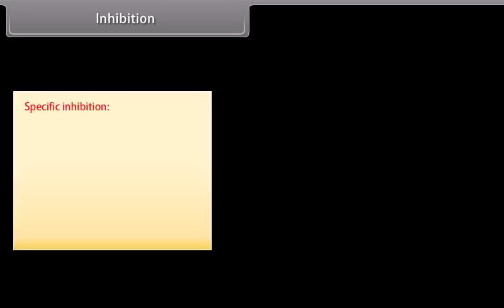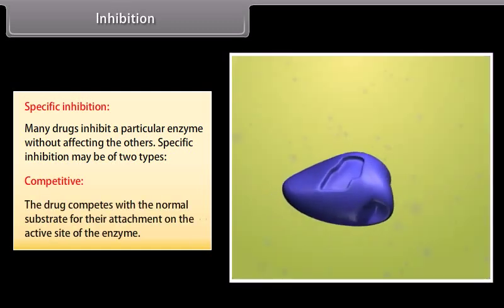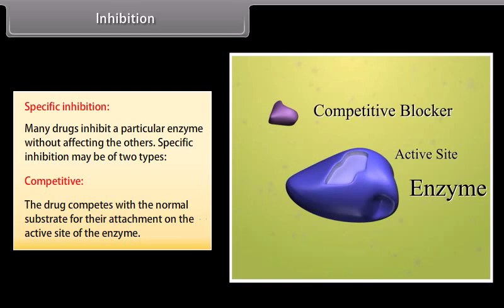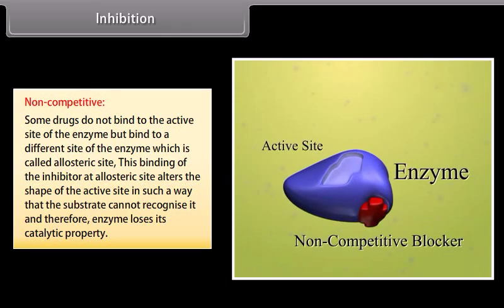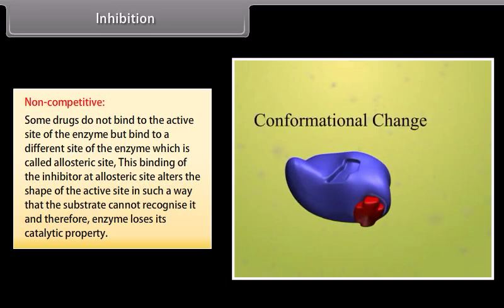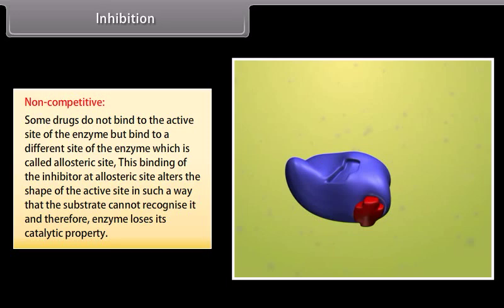Specific inhibition: many drugs inhibit a particular enzyme without affecting others. Specific inhibition may be of two types — competitive and non-competitive. In competitive inhibition, the drug competes with the normal substrate for attachment on the active site of the enzyme. In non-competitive inhibition, the drug binds to the allosteric site rather than the active site, altering the shape of the active site so that the substrate cannot recognize it, and thus the enzyme loses its catalytic property.